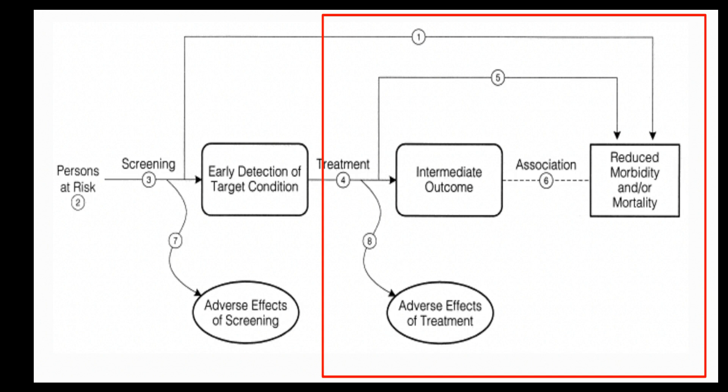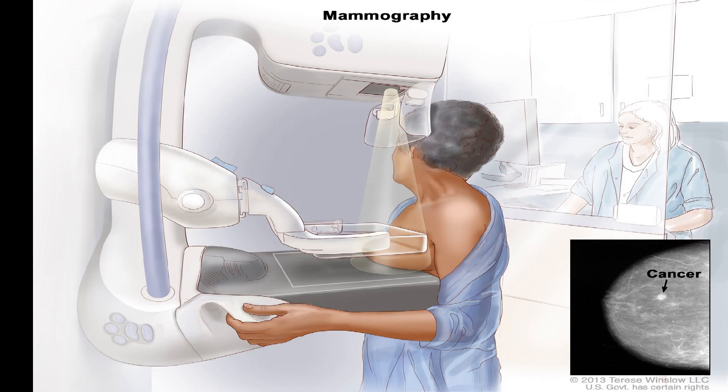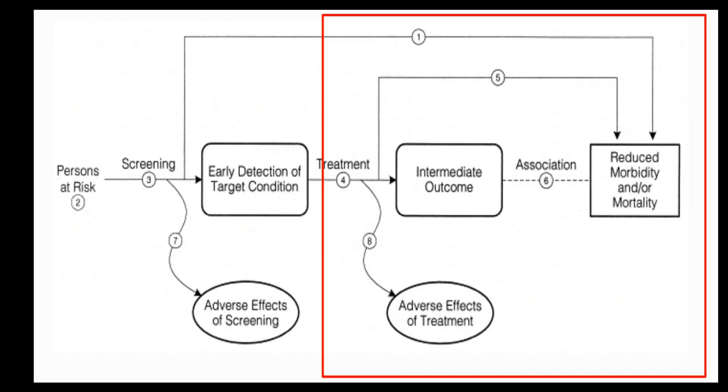Early detection is really an interim outcome. Were women upset by results that meant they had to come back for another test, for example? You can also see that with early detection and treatment, sometimes with breast cancer people are treated who really wouldn't need to be treated because nothing bad was ever going to happen to them. Unfortunately, we don't know ahead of time who needs to be treated and who doesn't, so that's a tough one to address in a real-life setting.